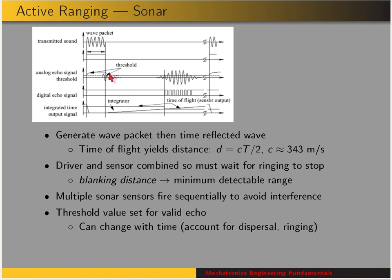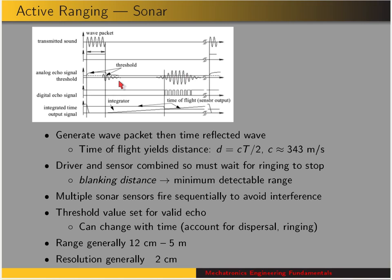This threshold can be adjusted. At the beginning of the time that the sensor listens for an echo, the threshold could be high, because a reflected sound wave would have a high amplitude if the object was close. And then as time goes on, the threshold could be lowered, because a faraway object would have a weak reflected sound wave. Sonar sensors generally have a minimum range of 12 centimeters and a maximum range of 5 meters, with a resolution of about 2 centimeters.